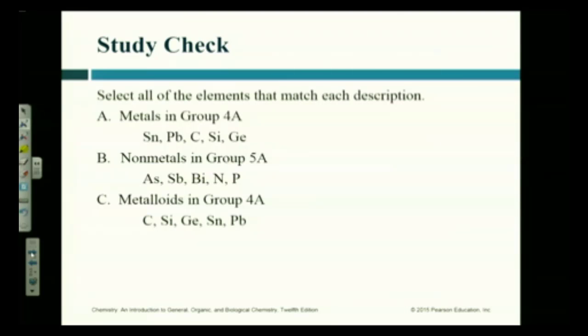Look at Group 4A. Are there any metals in Group 4A? Start at the top of Group 4A. What's the first element? Carbon. Is it a metal? No. It's a non-metal. What's the next element? Silicon. Is it a metal? No. Next element. Germanium. No. Next element. Tin. Symbol SN. Next element. Lead. Symbol PB. Lead is definitely a metal, isn't it? So tin and lead.